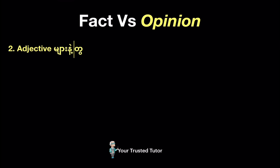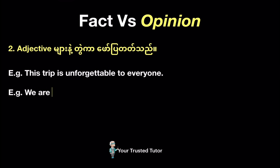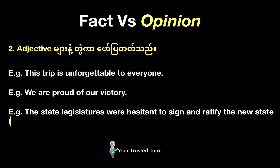Tip number two: an opinion is usually stated in terms of adjectives or words showing emotions. For example: 'This trip is unforgettable to everyone.' 'We are proud of our victory.' 'The state legislatures were hesitant to sign and ratify the new state laws.'